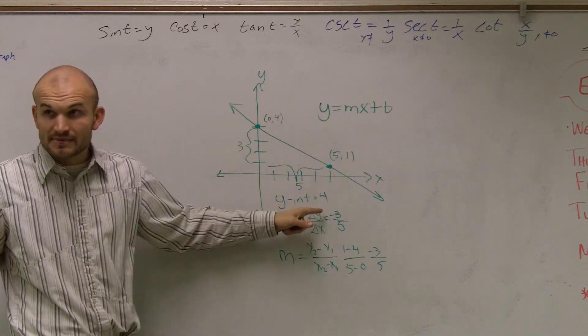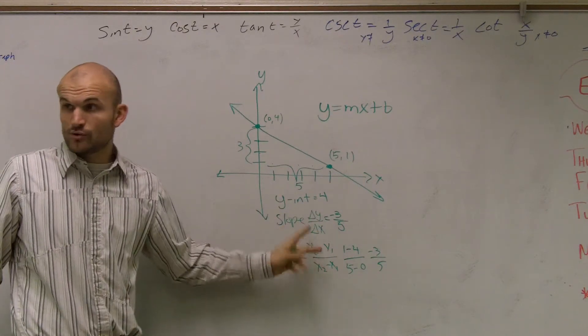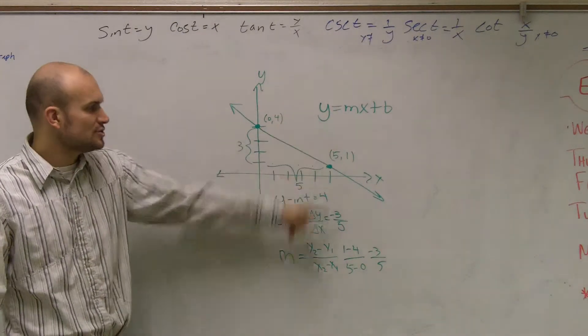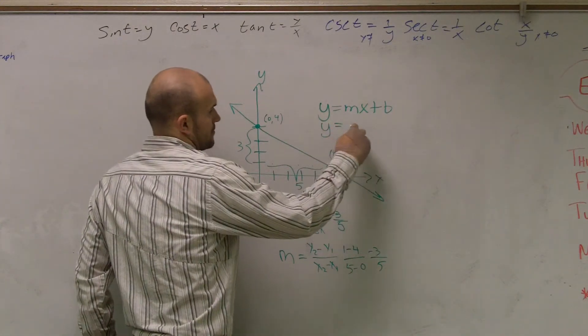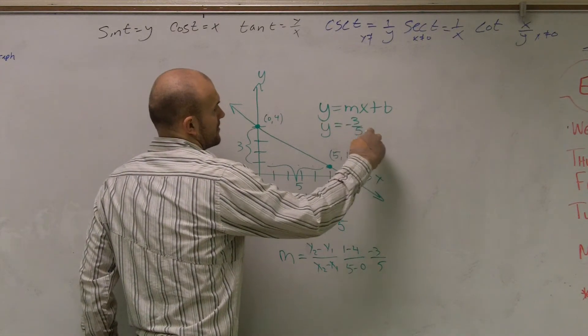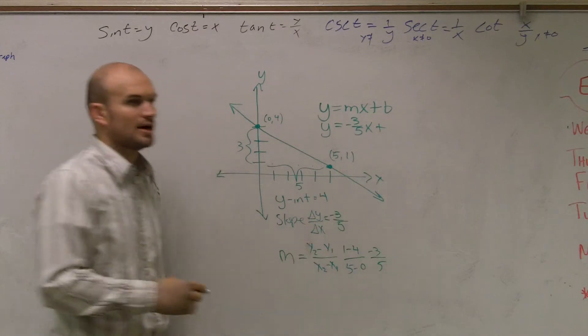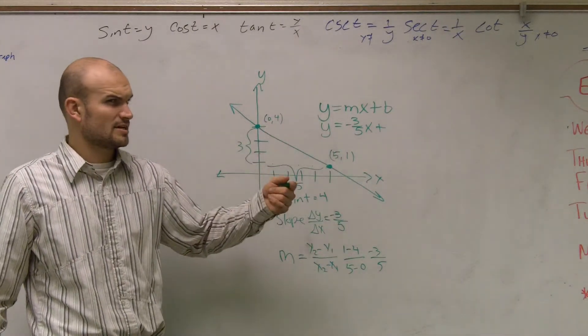So since I know what my y-intercept is, and I know what my slope, I gave you two ways to find the slope. So all you do is you plug the slope in for m, and then you plug in your y-intercept in for b. Got that?